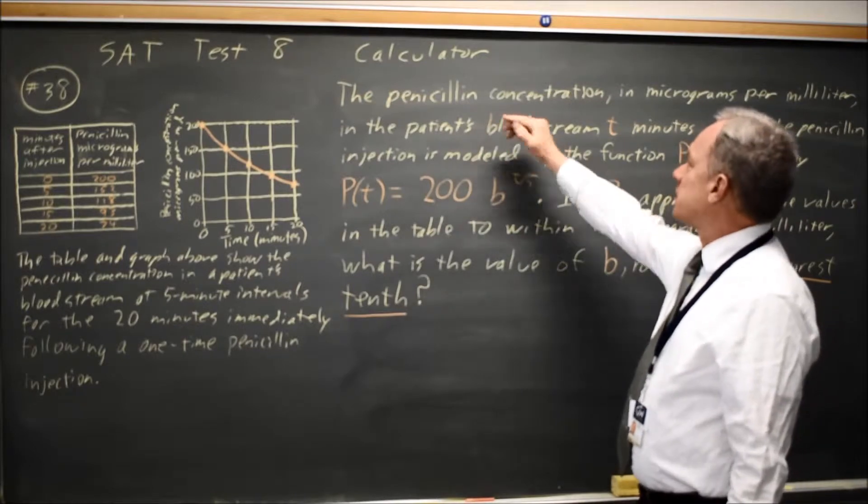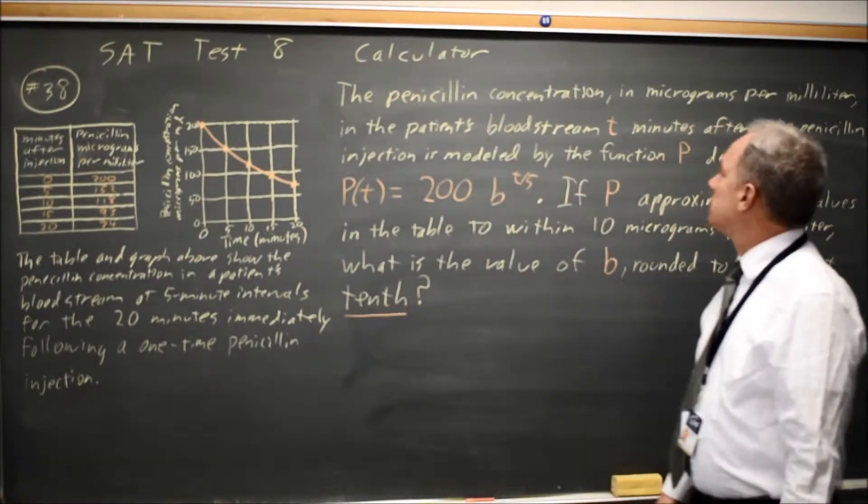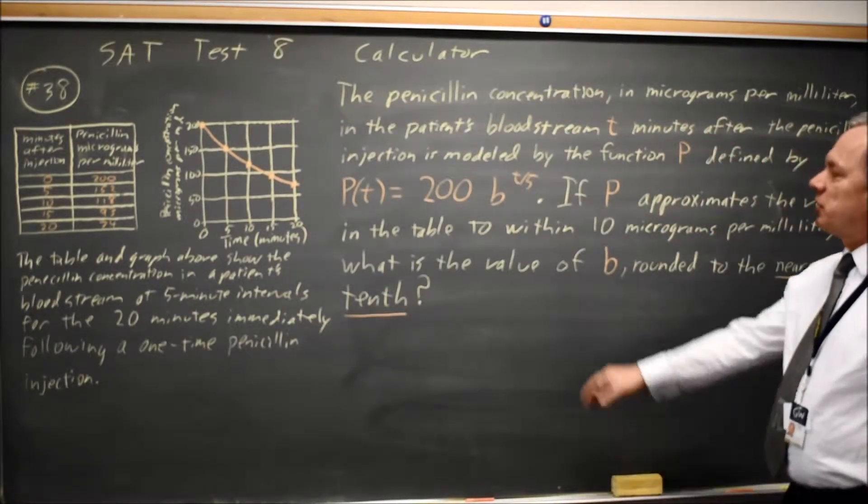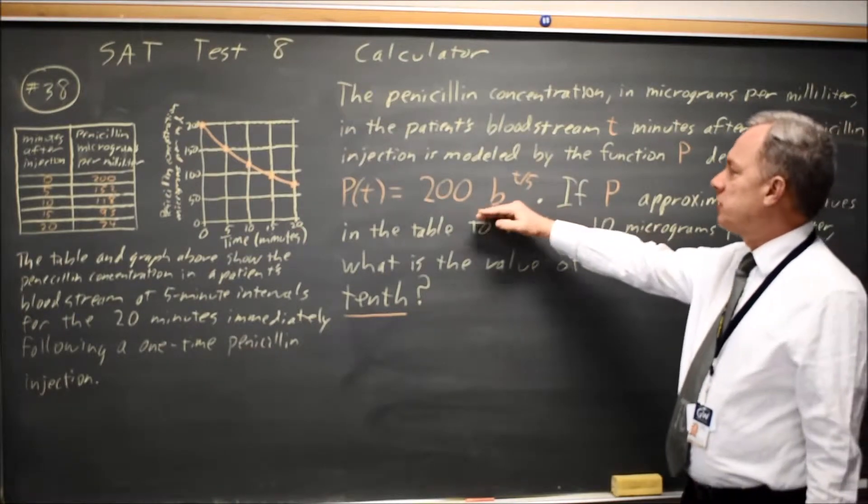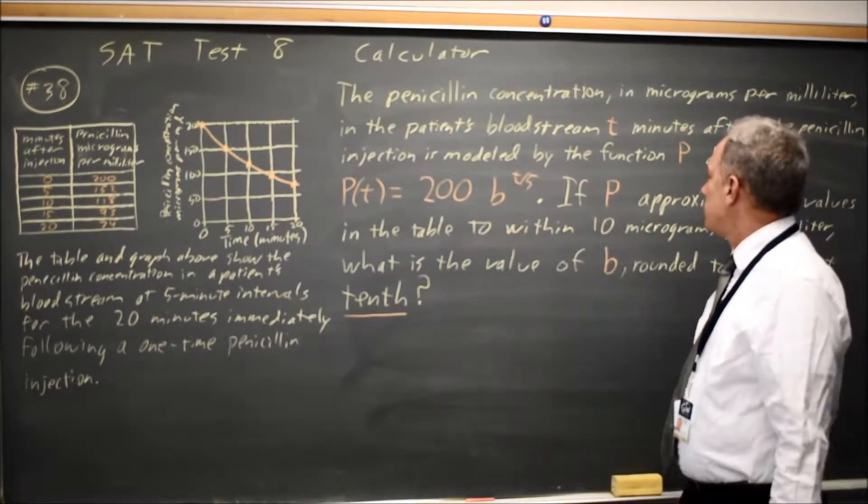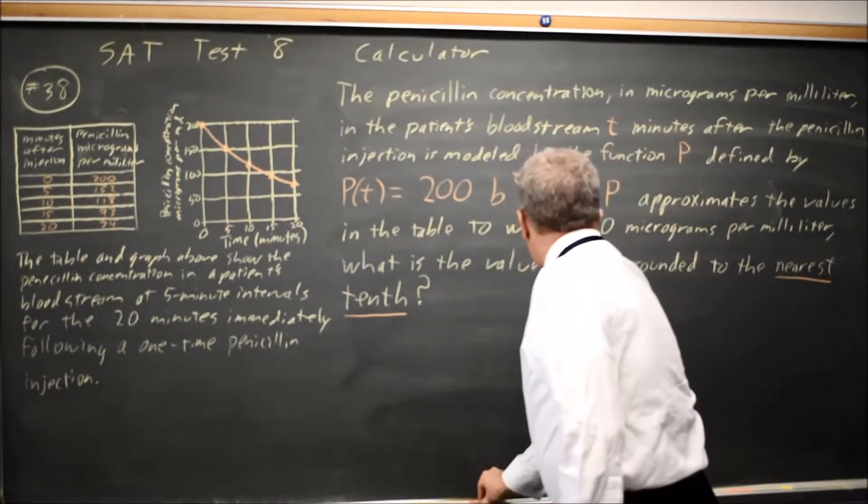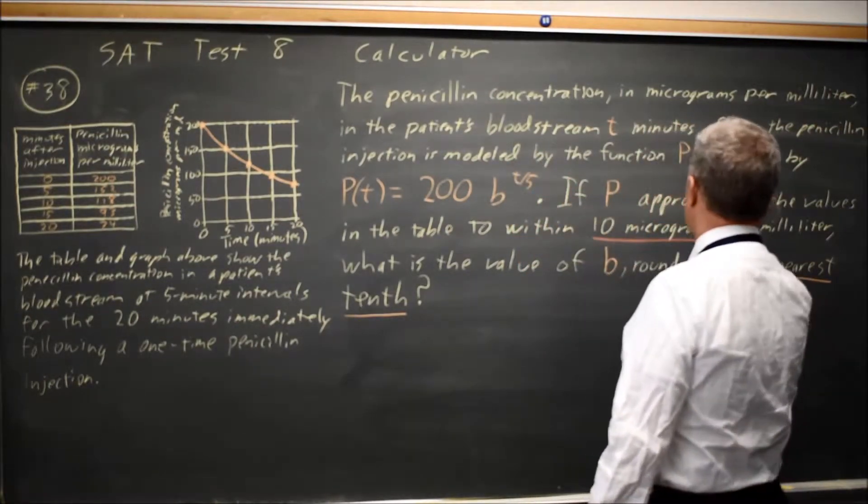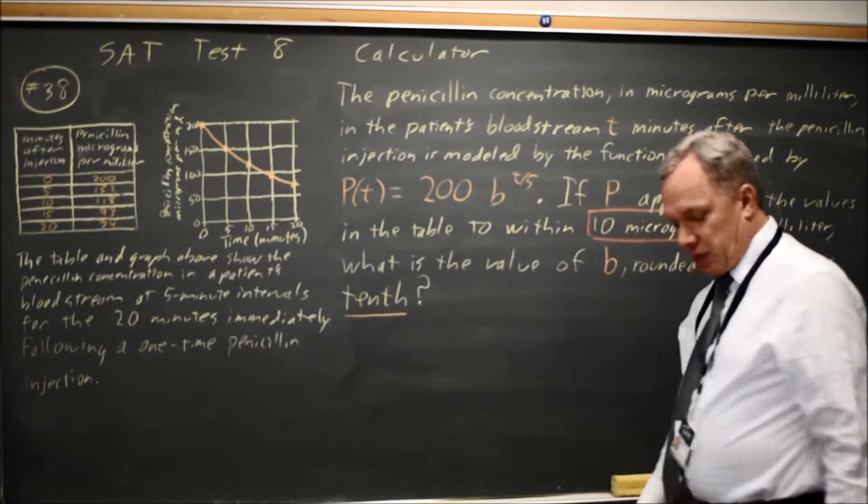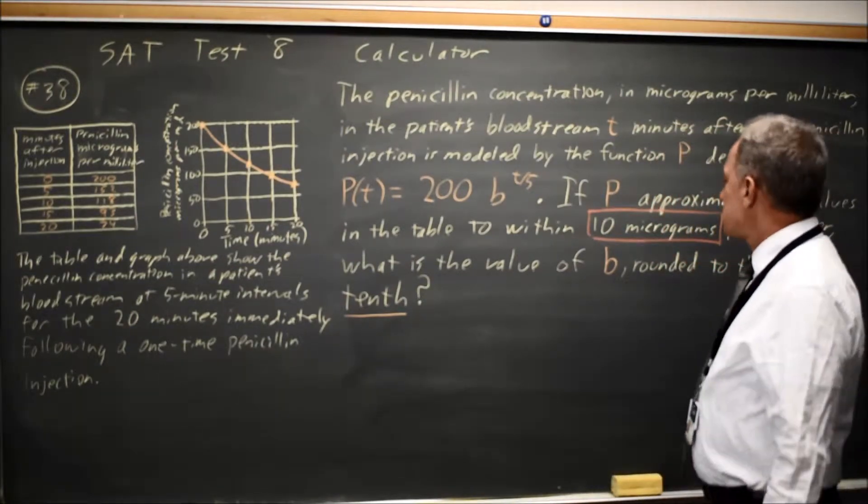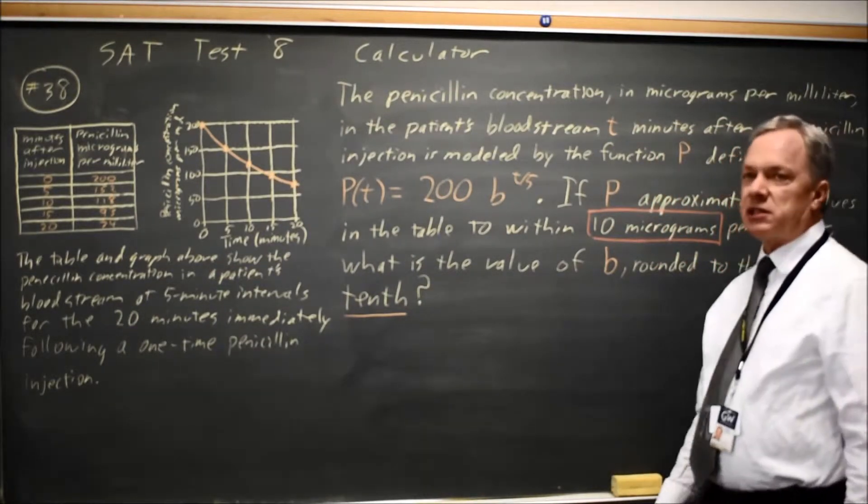And in this case, they're asking penicillin concentration is modeled by P of T equals 200 B to the T over 5. If P approximates values to within 10 micrograms per milliliter, what's the value of B rounded to the nearest tenth?